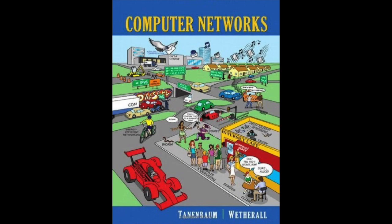Sockets were first released as part of the Berkeley Unix 4.2 BSD software distribution in 1983 and quickly became popular. The primitives are now widely used for internet programming on many operating systems, especially Unix-based systems, and there is a socket-style API for Windows called Winsock. The socket primitives include: SOCKET (create a new communication endpoint), BIND (associate a local address with a socket), LISTEN (announce willingness to accept connections with a queue size), ACCEPT (passively establish an incoming connection), CONNECT (actively attempt to establish a connection), SEND, RECEIVE, and CLOSE (release the connection).